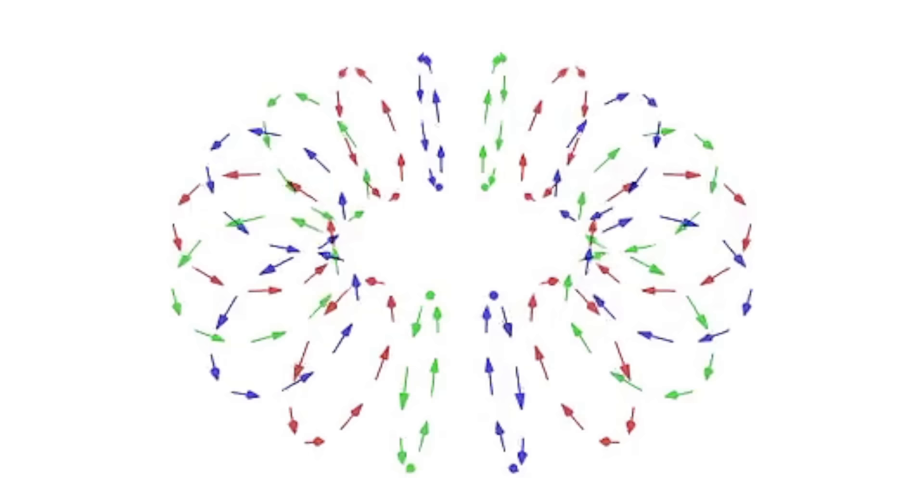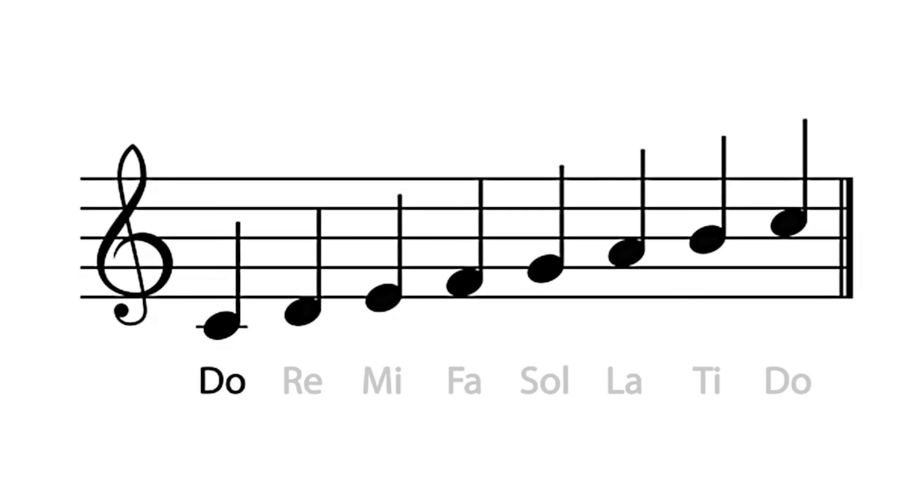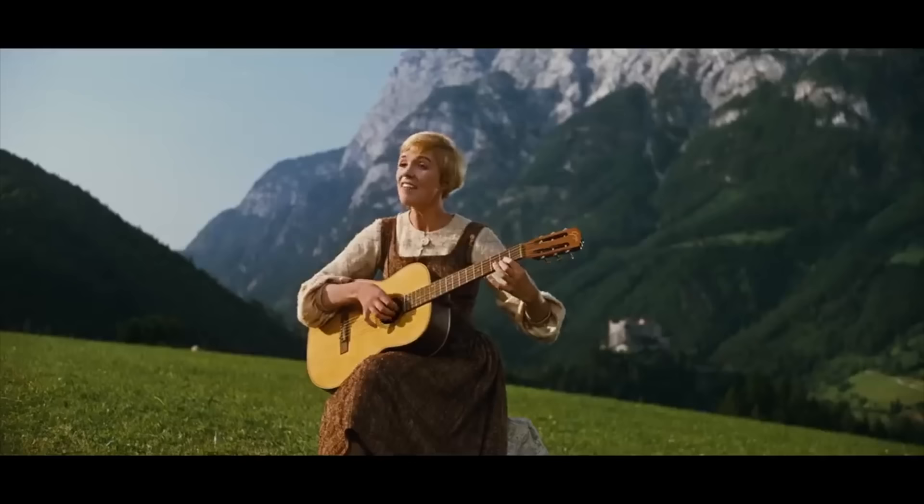A vortex ring, also called a toroidal vortex, is a torus-shaped vortex in a fluid, that is, a region where the fluid mostly spins around an imaginary axis line that forms a closed loop. The dominant flow in a vortex ring is said to be toroidal, more precisely, poloidal.